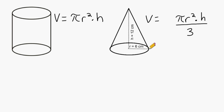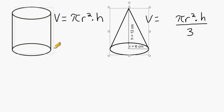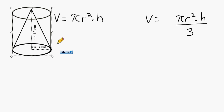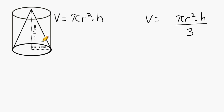If we were to take a look at our cone right here and drop it right inside of our cylinder, we should see that it fits inside nice and snug. And the volume of space that it would occupy inside of the cylinder would be one-third the volume of the cylinder.